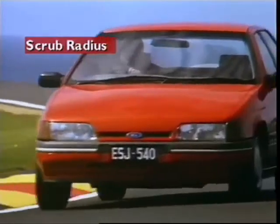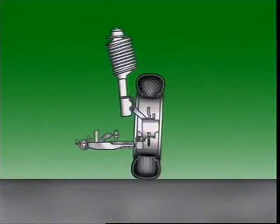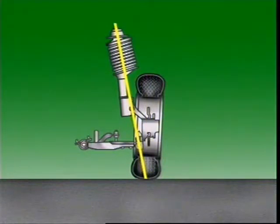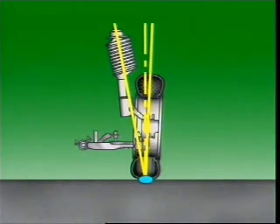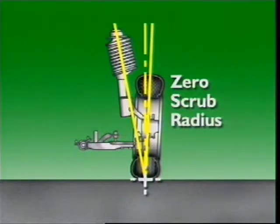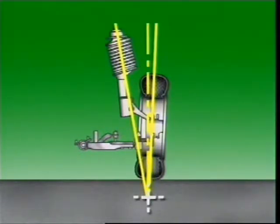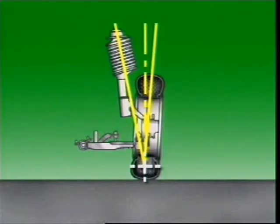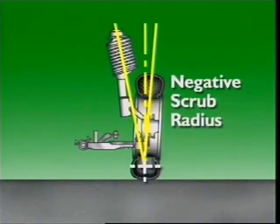This section examines scrub radius, also known as steering offset and scrub geometry. It is the distance between two imaginary points on the road surface: the centre contact point between road and tyre, and the point where the steering axis centre line contacts the road. If these two points intersect at the centre of the tyre at road surface, scrub radius is zero. If they intersect below the road surface, scrub radius is positive. If they intersect above the road surface, scrub radius is negative.